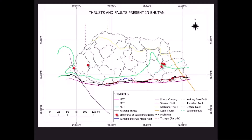Moving on to the thrusts and faults that are present in Bhutan — this is the map I have generated using the software QGIS, which shows the thrusts and faults present in Bhutan. The thrust and fault data marked on this map was gathered from my classmates' presentations in a flipped classroom session. I gathered all the information from other group members, compiled it, and generated this map to locate all thrusts and faults on a single map, making it easier to understand and locate them.